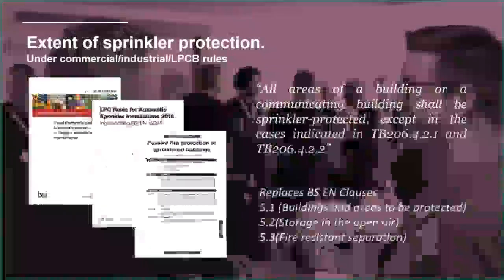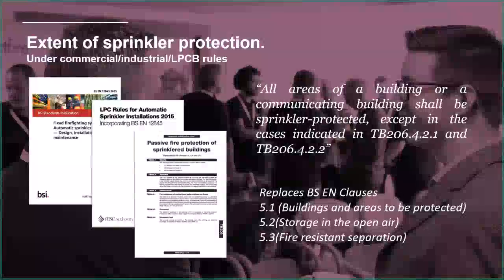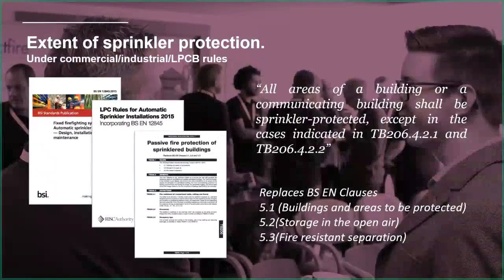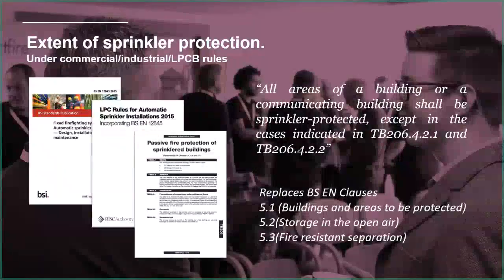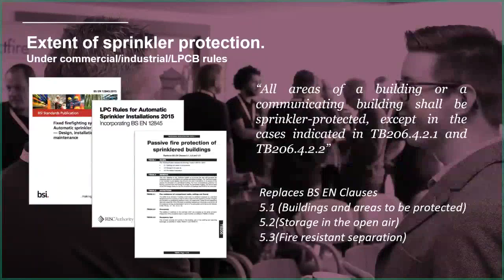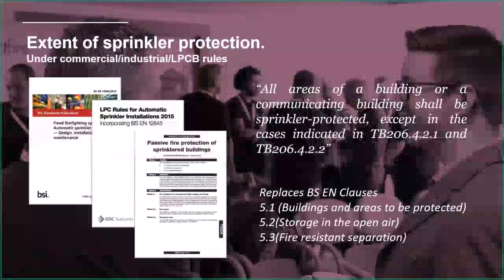Under the industrial and commercial rules, we're looking at the LPCB rules. These are made of several different parts: the British Standard 12845, technical bulletins, and one of these - TB206 - is all to do with passive fire protection of sprinkler buildings and covers areas which do not have to be sprinkler protected. The quote from that technical bulletin is very similar language: all areas of a building or communicating building shall be sprinkler protected, except in the cases indicated below. The technical bulletins give more information and on occasion actually overwrite what the British Standard says.